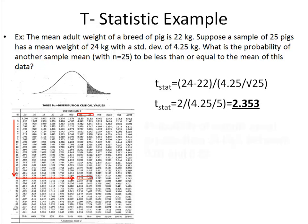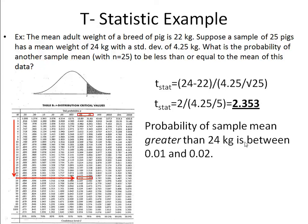So it lies, so what we can say is that the probability of a sample mean being greater than 24 kilograms is somewhere between 0.01 and 0.02. So between 1 and 2 percent are your odds that you'll find another sample mean that's greater than 24 kilograms.